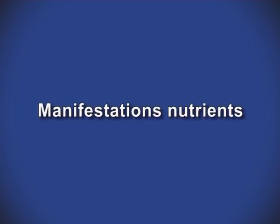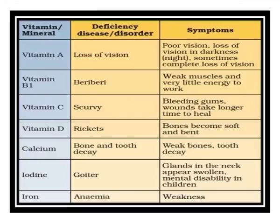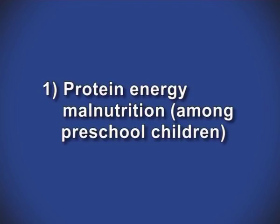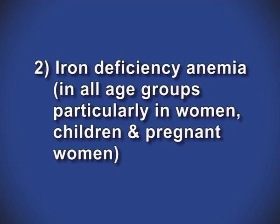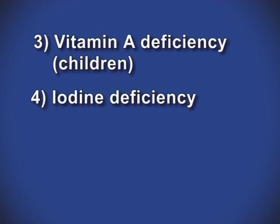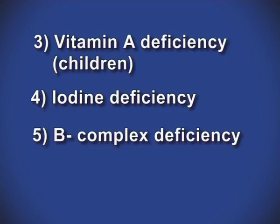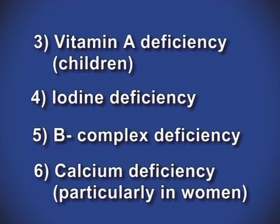Manifestations of nutrients: as a consequence of dietary deficiency, several nutritional deficiencies with clinical manifestations and disabilities are encountered among different age groups. These include protein energy malnutrition (PEM), which is common among preschool children; iron deficiency anemia in all age groups, particularly in women, children and pregnant women; vitamin A deficiency in children; iodine deficiency; B complex deficiency; and calcium deficiency, particularly in women.